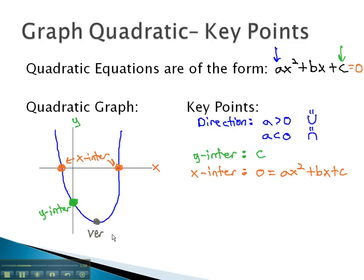The last key point we find is the point where it changes direction at the bottom or top, called the vertex. The vertex has two components we need to find. The first is the x-coordinate, which we find by taking the values for a and b in the equation, using the simple formula, the opposite of b over 2a.